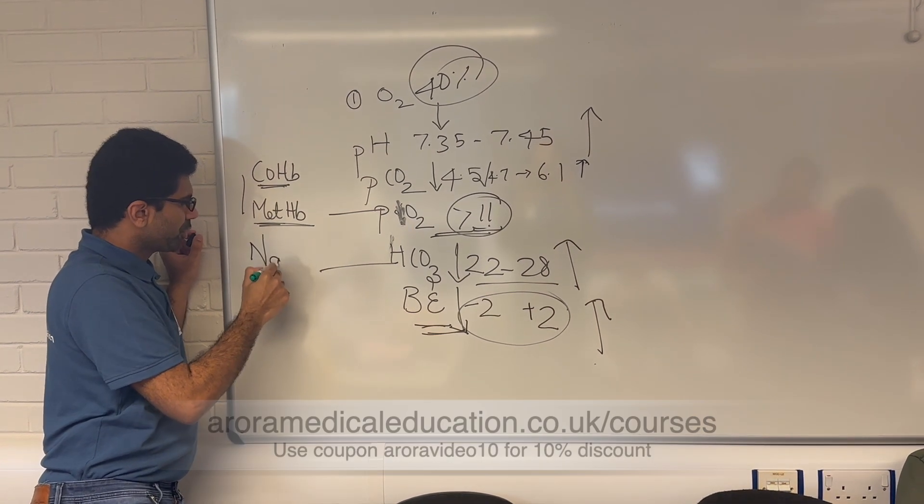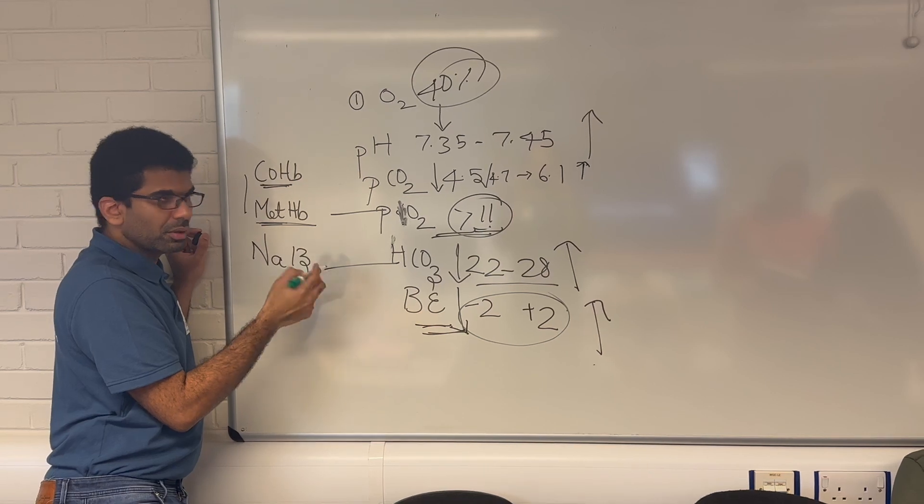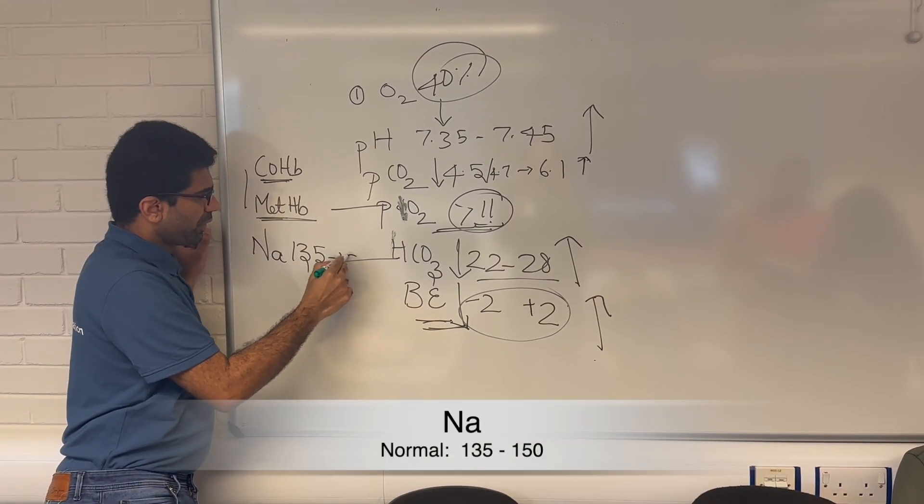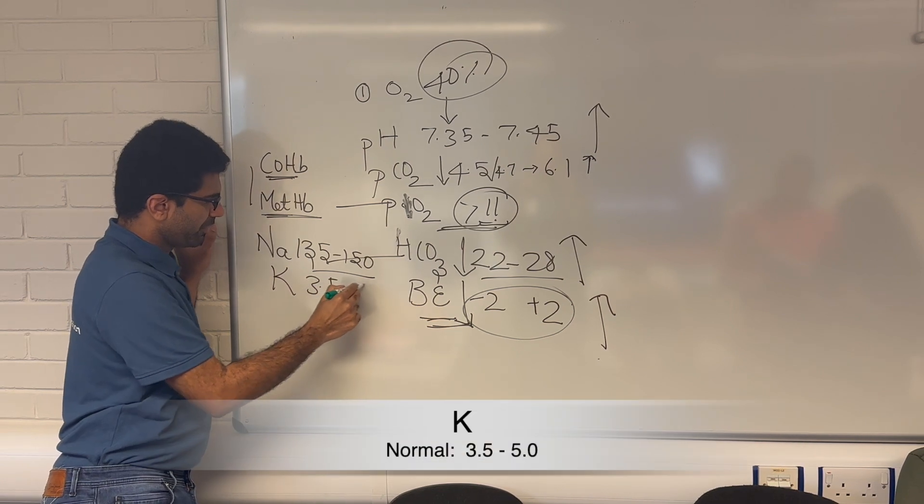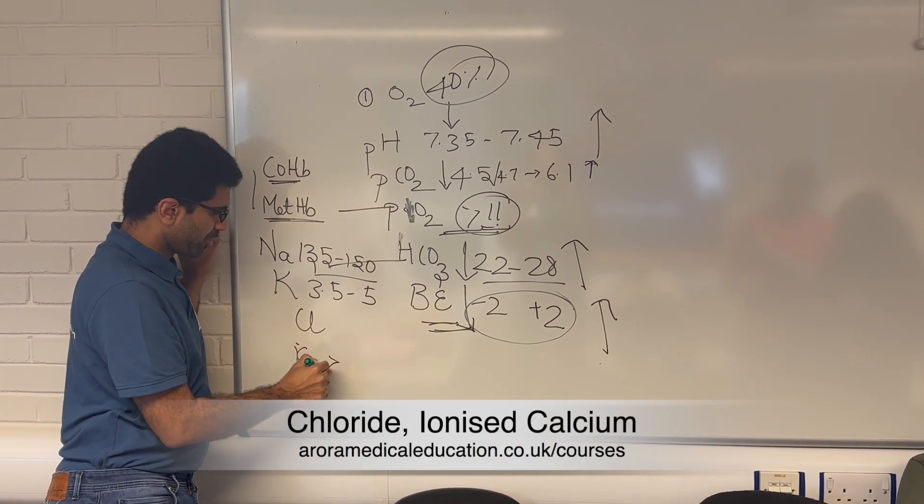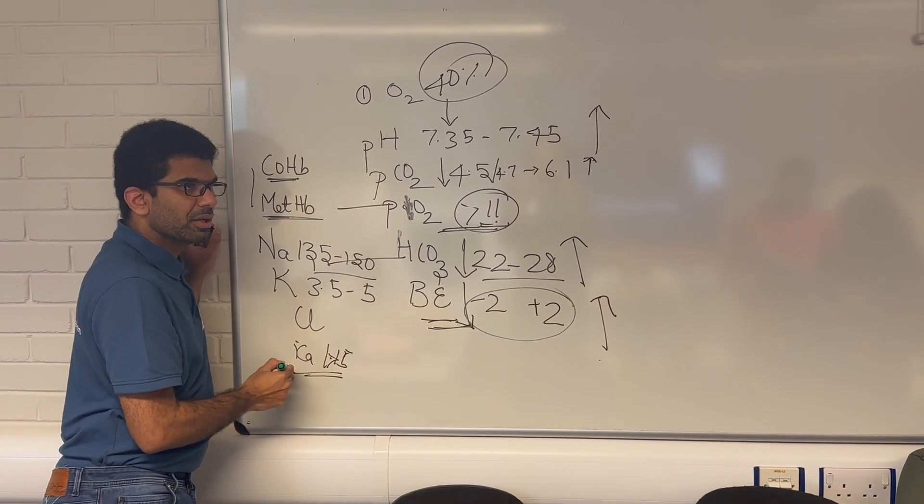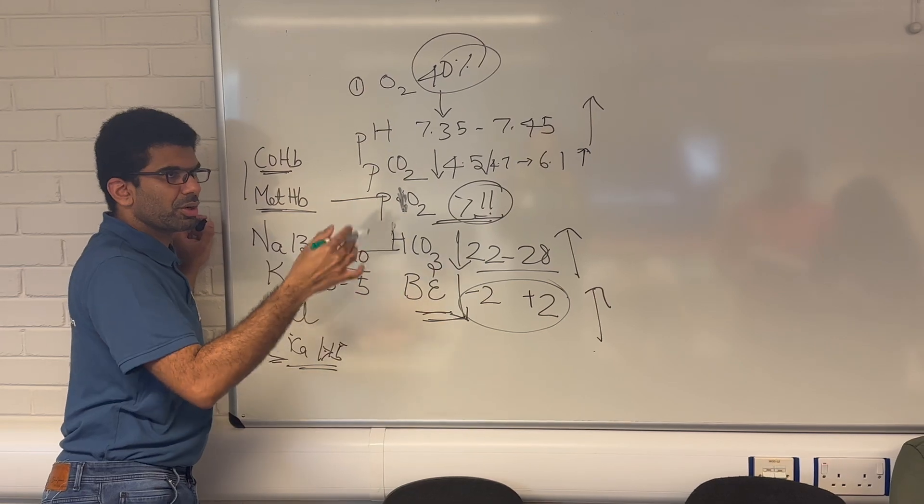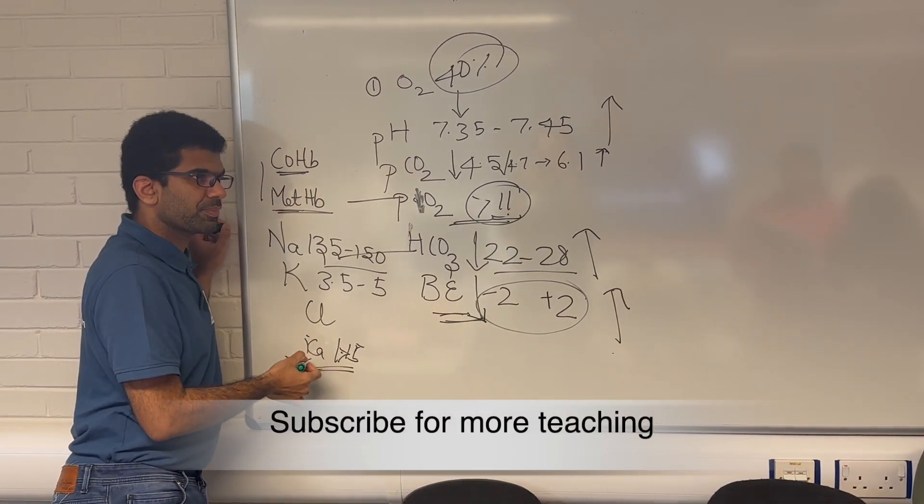You can also have sodium, which is your levels range of 135 to 150, they say. And then you have potassium, which is 3.5 to 5. And then you have chloride, you have calcium. So this is ionized calcium, which will mostly be above 1.15. This is not your normal calcium, ionized calcium. If you double it, it will be around 2.2 to 2.6 in your normal calcium or corrected calcium. This is your ionized calcium.